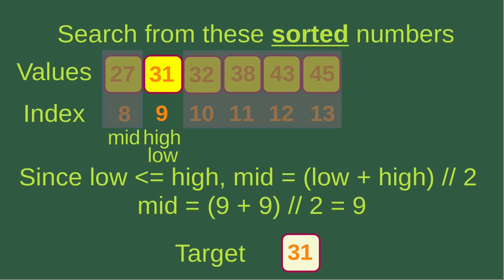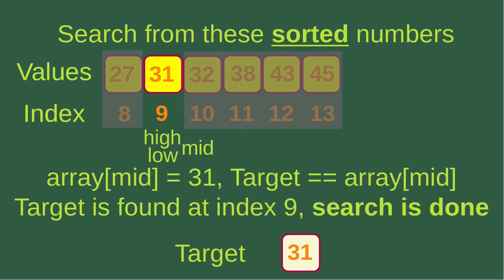Now we have only one element left to consider. Since the low index is equal to the high index, I can use the formula again to find out the mid-index, which is also equal to 9. Now we see that the middle element is equal to 31, which is also equal to array[high] and array[low]. In this case, we can say that the target is really equal to that number, so the target can be found at index number 9. The search is done because we found our target in the given array.